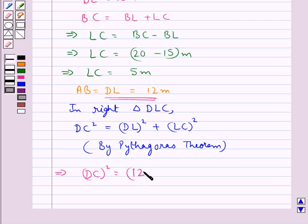So this is equal to 12 square plus 5 square. That is DC square is equal to 144 plus 25.